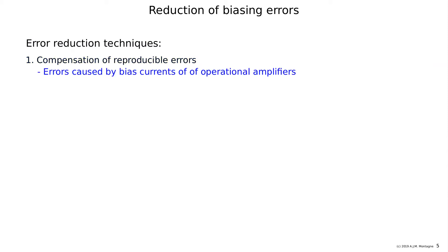We can compensate for known errors caused by bias currents of operational amplifiers. If we know how large the bias current is, we can find means to compensate for these errors because they are reproducible.